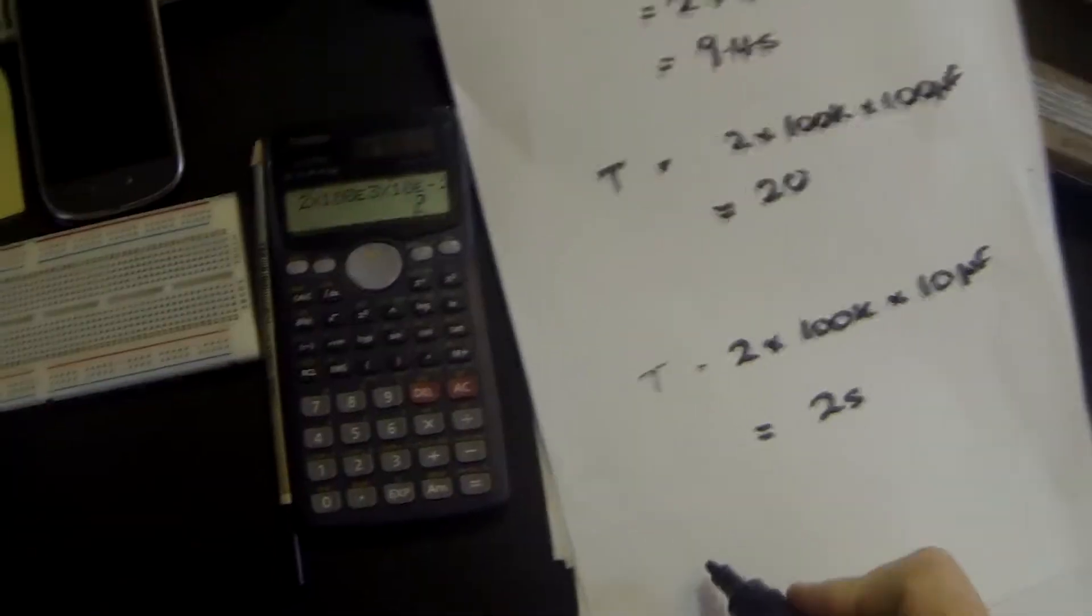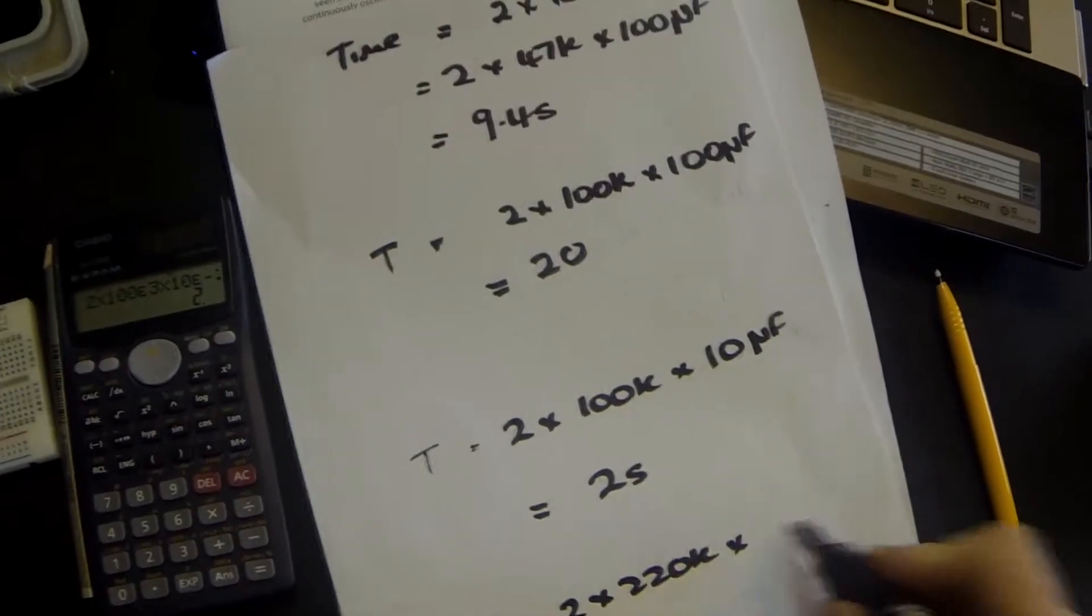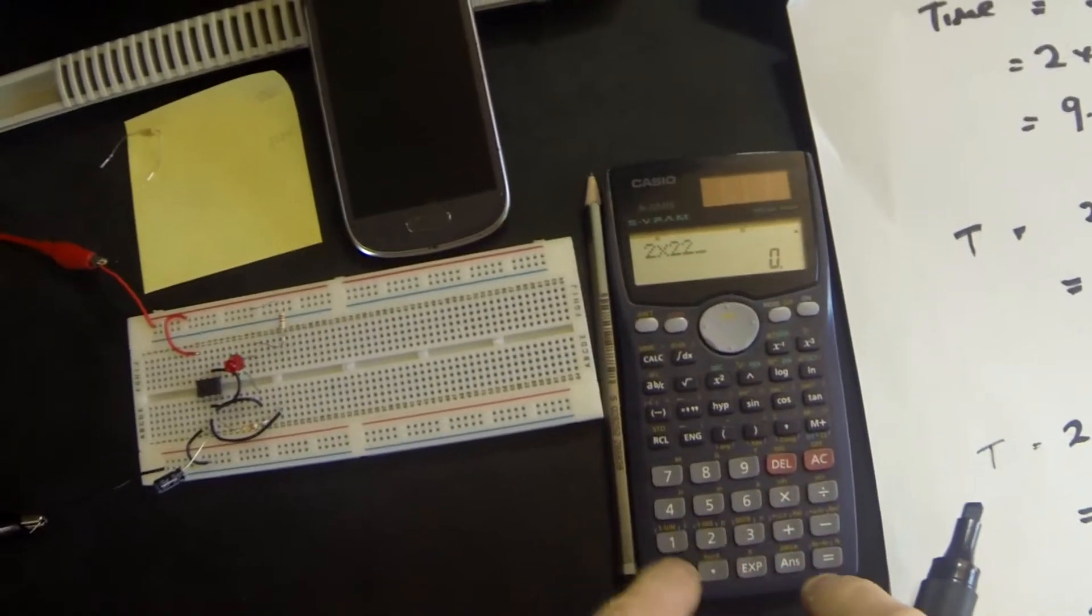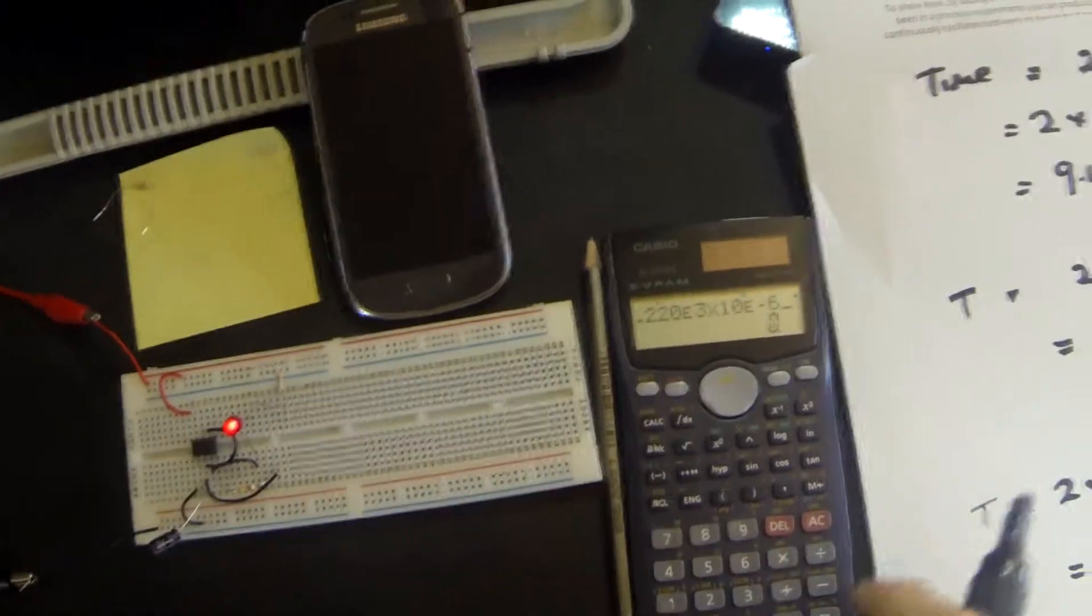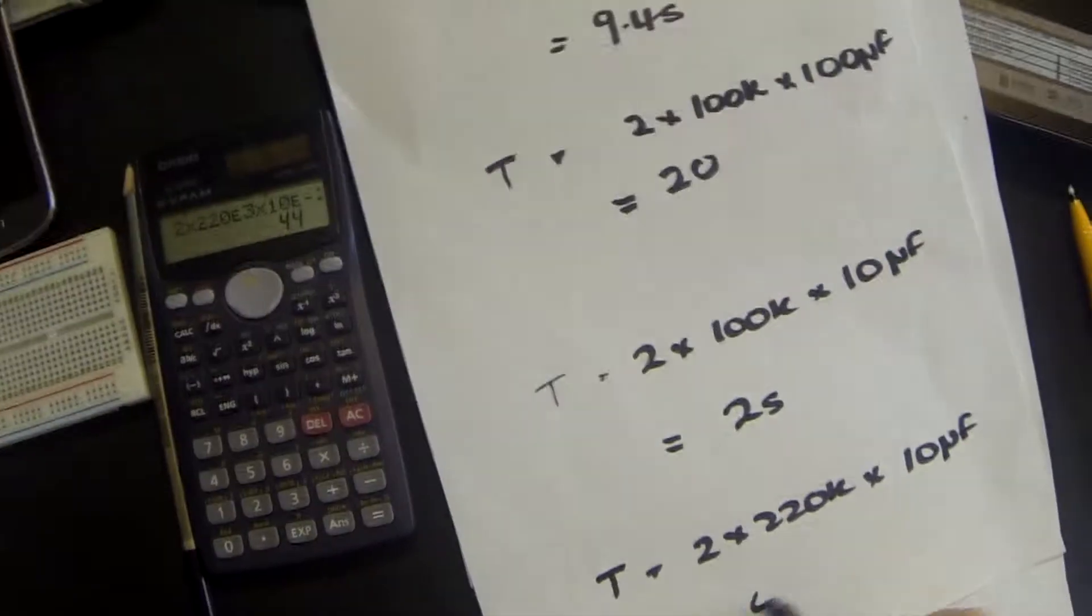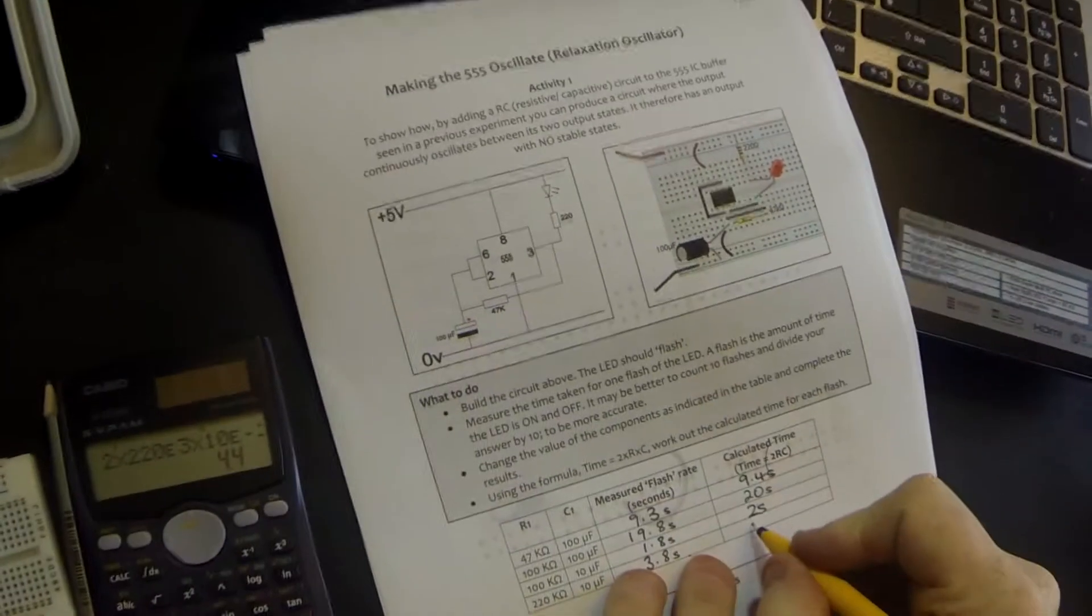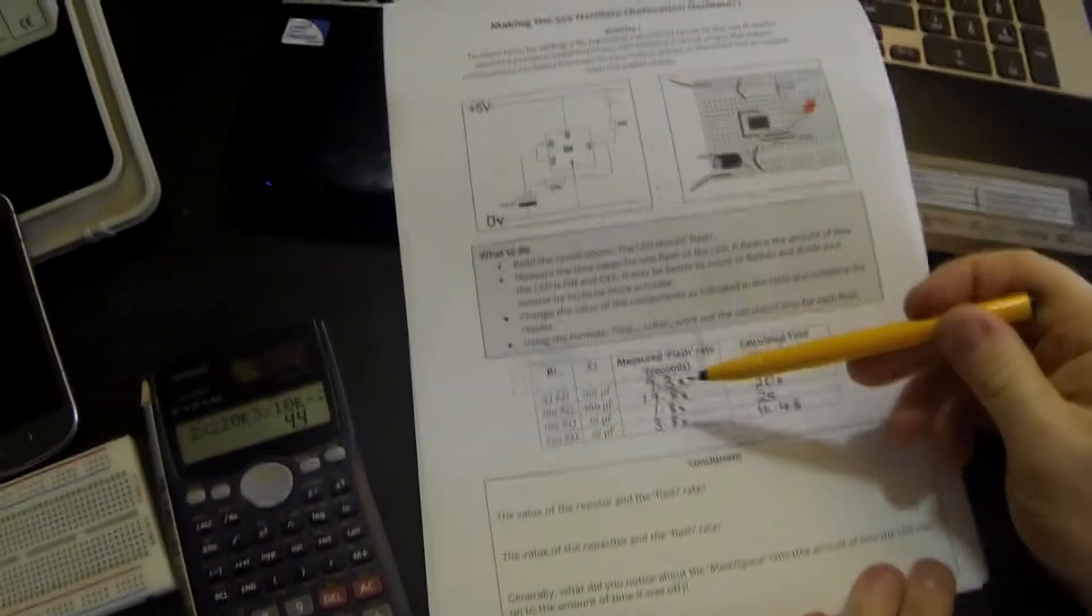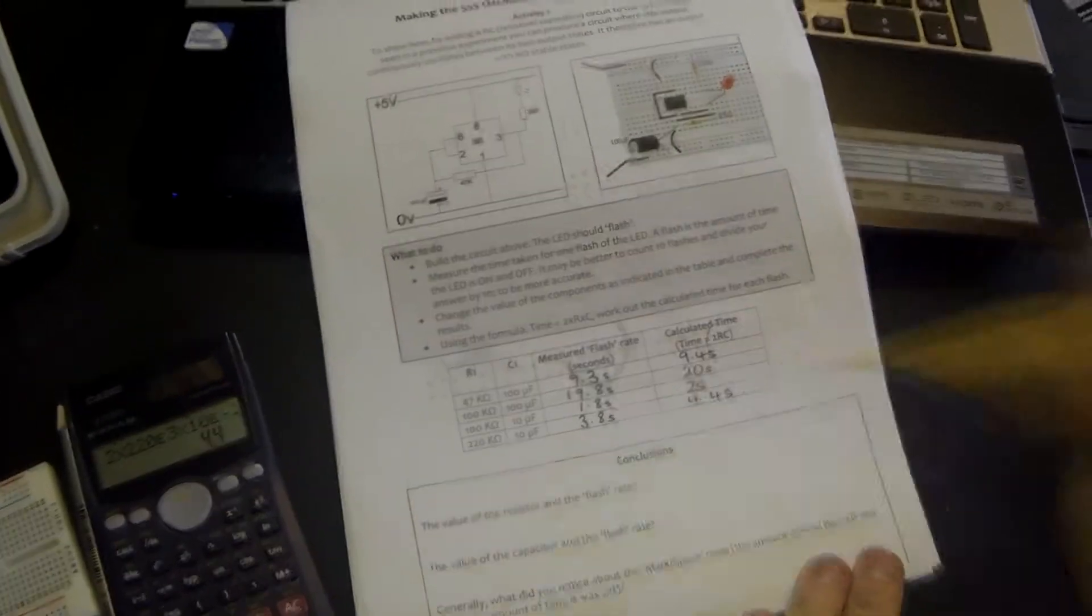And then, finally, the last one, we used a 220 kilohm resistor, and we used the 10 microfarad capacitor. So, we used 2 times 220k, times 10 exponent minus 6 for micro equals 4.4 seconds. So, 4.4 seconds. That one's probably the one that's proven to be just the most out here, certainly in terms of tolerance. But, they're all pretty good results. 9.3 should have been 9.4, 19.8 was 20, 1.8 was 2, and 3.8 was 4.4.